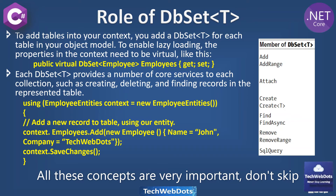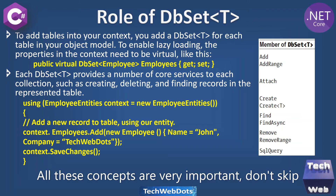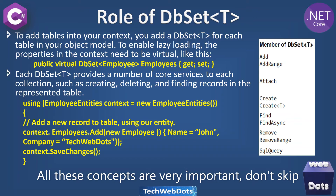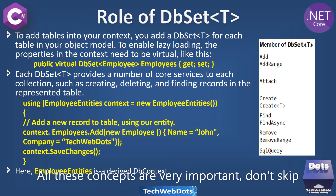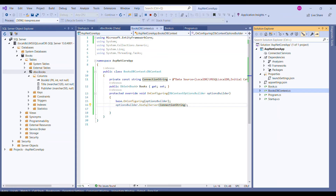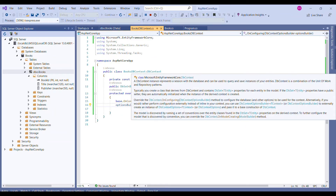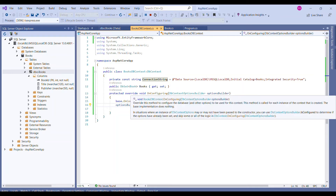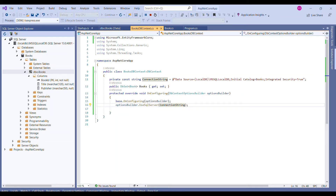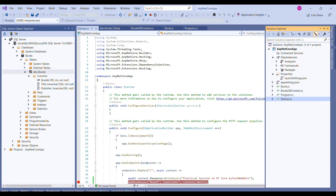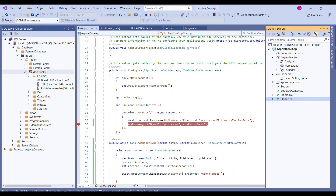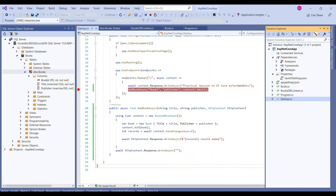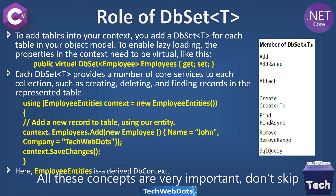On the right-hand side we can see the different members of DbSet: Add, AddRange, Attach, Create, CreateOfType (a generic type), Find, FindAsync, Remove, RemoveRange, and SqlQuery. EmployeeEntities is a class derived from DbContext. In the program's startup section, we call SaveChanges asynchronously and save the data to the SQL Server database using the connection string configured in the OnConfiguring method.